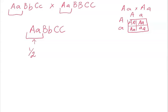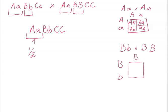Now we approach the next set of genes. The first parent offers big B little b, and the other parent offers big B big B. We do a mini cross, and we can see that half of the offspring will be homozygous and half will be heterozygous. So the probability of getting big B little b is also one half.